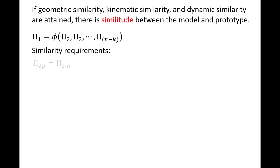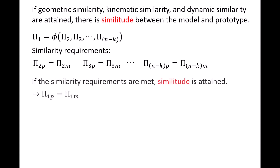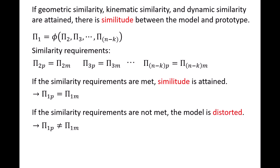The similarity requirements are: pi2 of the prototype equals pi2 of the model, pi3 of the prototype equals pi3 of the model, all the way to the last pi group of the prototype equaling the last pi group of the model. If we are able to meet these similarity requirements, similitude is attained and we can use the prediction equation to predict the behavior of the prototype: pi1 of the prototype would equal pi1 of the model. In practice, it may be difficult to meet all similarity requirements. If even one is not met, we say the model is distorted and pi1 of the prototype will not equal pi1 of the model.